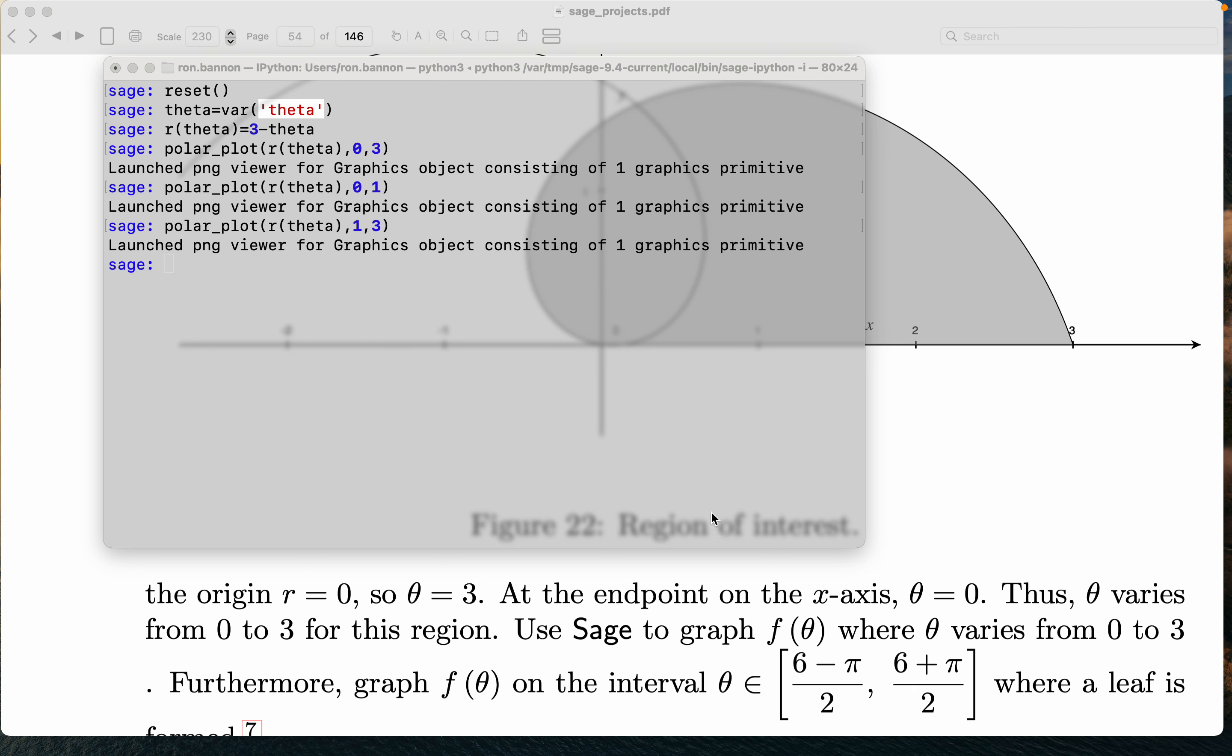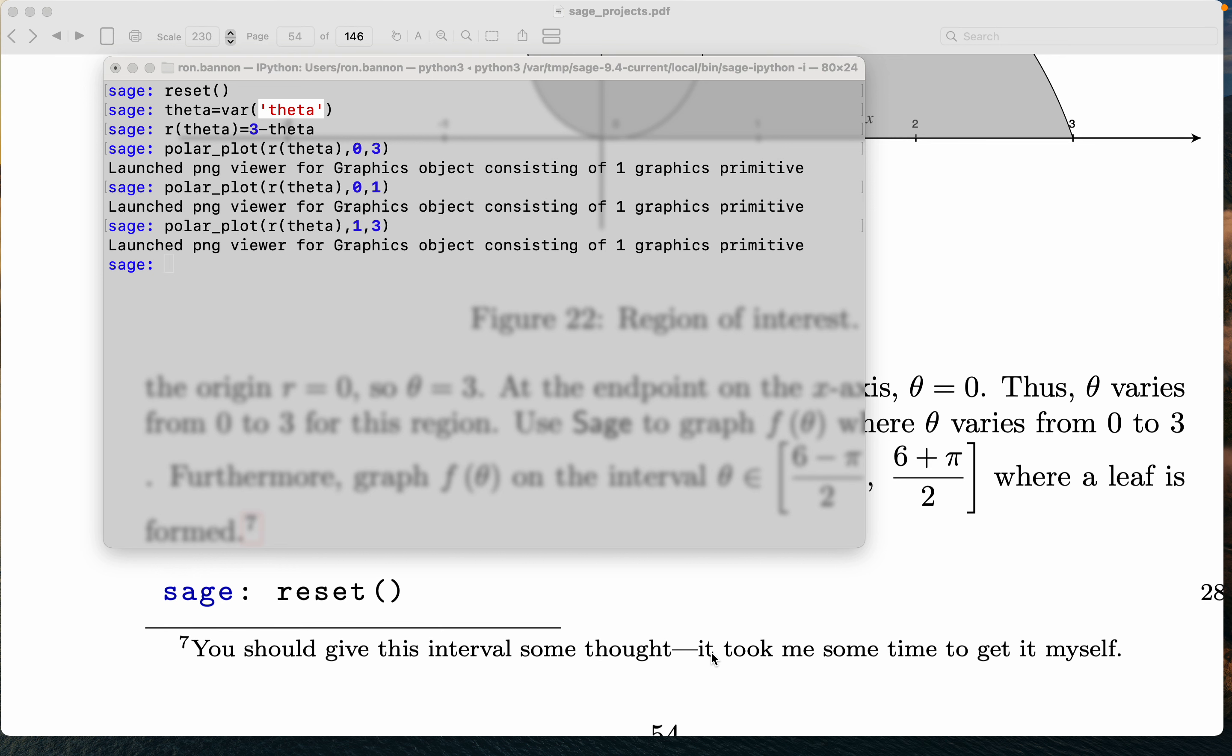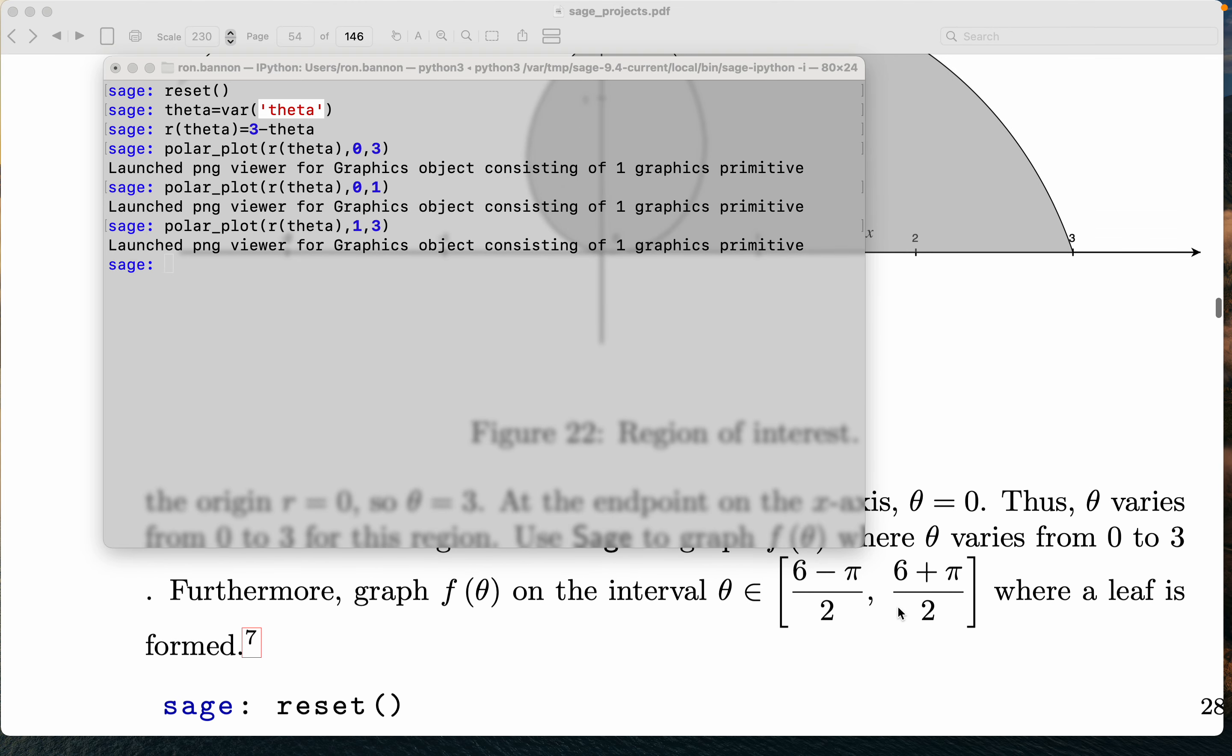All right? The next thing I want to do is they want to get the leaf. And they told me this. I want to point out there's a footnote over there. And the footnote says, you should give this interval some thought. It took me some time to get it myself, by the way. And by the way, this is going to be something you're going to see in the future. We're going to ask you what the leaf is. You have to be able to figure that out. I know it's difficult. But let me go back to this over here. I'm going to draw the leaf now. And the leaf, according to them, the theta is between, let's write this down, six minus pi. I'll write this over here. Six minus pi divided by two. That's the lower limit. And the upper limit is six plus pi divide. Whoops, I made a mistake. I've got to correct it. So it's quantity six plus pi divided by two. Whoops, I did it again, didn't I?